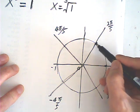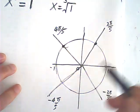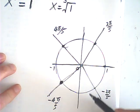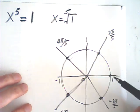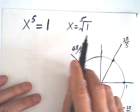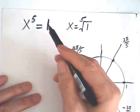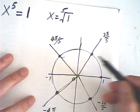So we have 5 roots: 1, 2, 3, 4, and 5. These 5 points are the roots of 1, fifth root of 1.